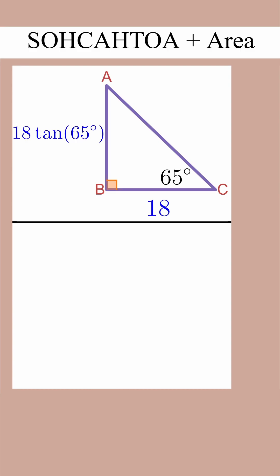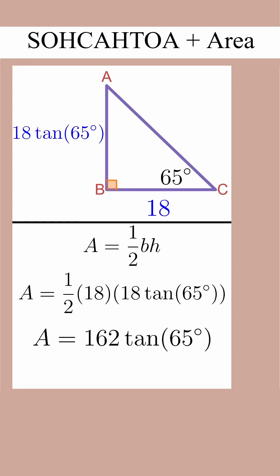Now we can put that new side we just found on our picture, and we can use area equals one-half base times height, where the base is 18 and the height is 18 tan of 65. This gives us 162 tan of 65. Remember the question said that the area is equal to K tan of 65, so the answer is K equals 162.